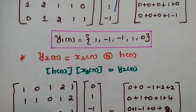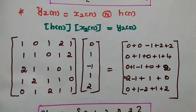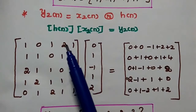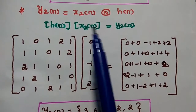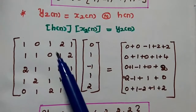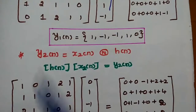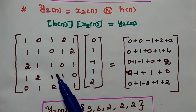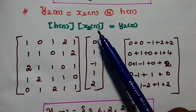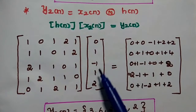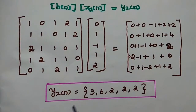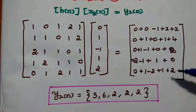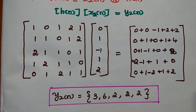Similarly, for y2(n) = x2(n) circularly convolved with h(n), we use the same matrix multiplication method with the same h(n) matrix. With x2(n) = {0, 1, -1, 1, 2}, we obtain y2(n) = {3, 6, 2, 2, 2}.